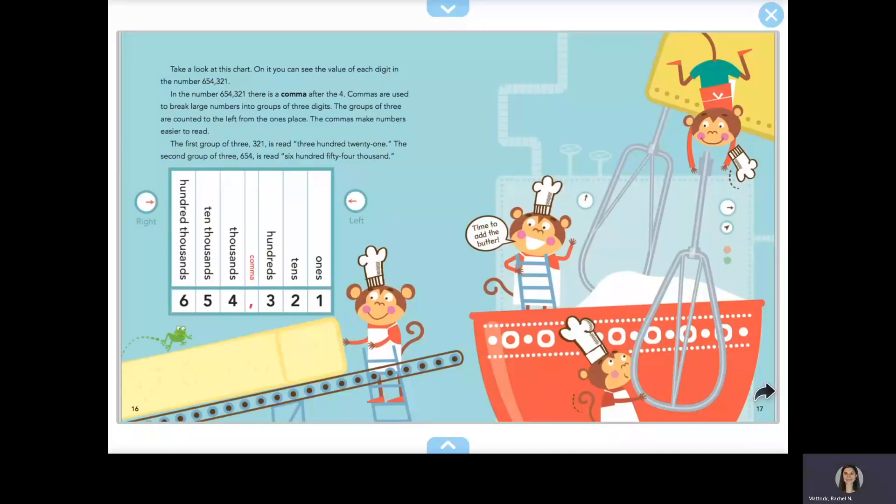Take a look at this chart. On it, you can see the value of each digit in the number 654,321. In the number 654,321, there is a comma after the 4.